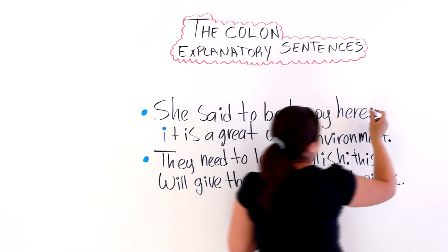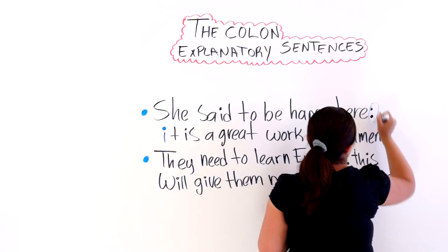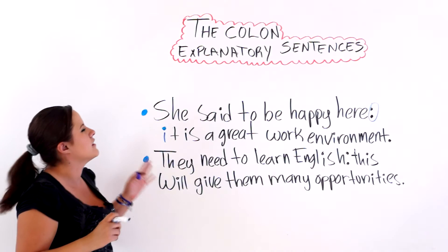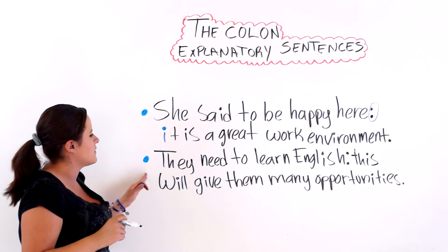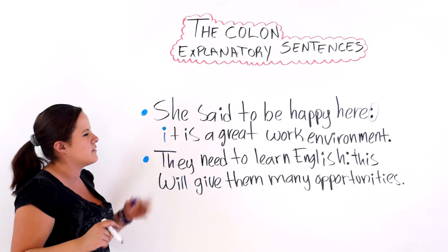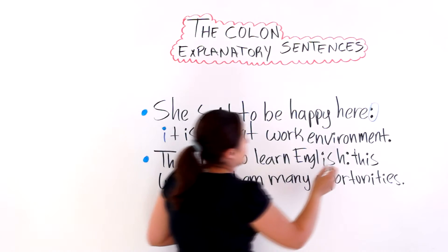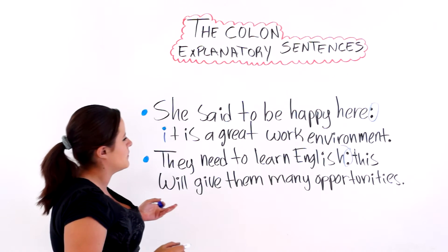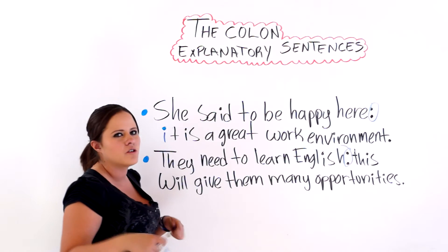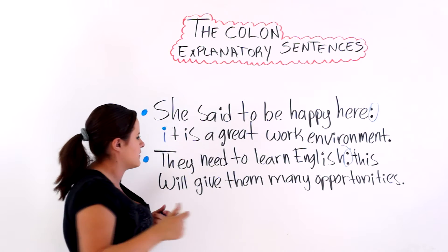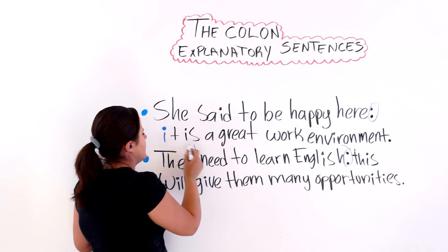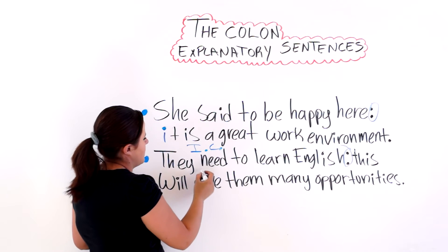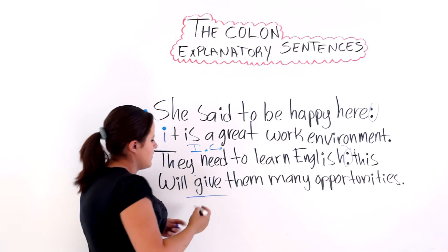As you can see, we use a colon to separate our two independent clauses in our explanatory sentence. The next one says: they need to learn English — then we have the colon — this will give them many opportunities. So we have another explanatory sentence with two independent clauses, one and one.